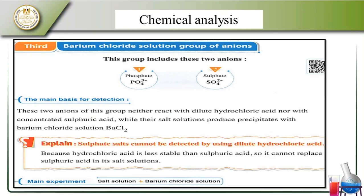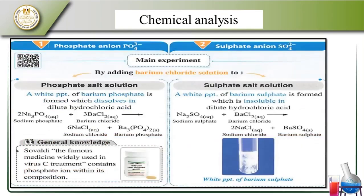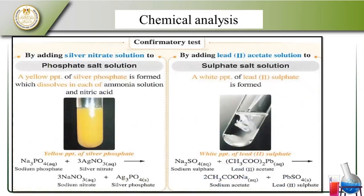Sulfate salt can be detected by using dilute sulfuric acid, because hydrochloric acid is less stable than sulfuric acid. Barium phosphate is insoluble. Sodium carbonate with magnesium sulfate gives sodium sulfate. When sulfate salt solution is added to barium chloride, we get sodium chloride and barium sulfate. With silver nitrate solution, we get a yellow precipitate from silver phosphate. Sodium phosphate with silver nitrate gives sodium nitrate and silver phosphate. Lead sulfate is formed: from sodium sulfate and lead acetate we get lead acetate and lead sulfate.